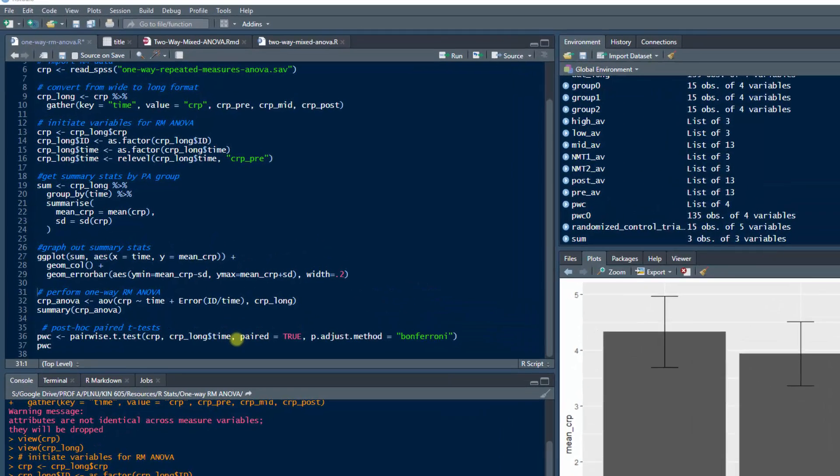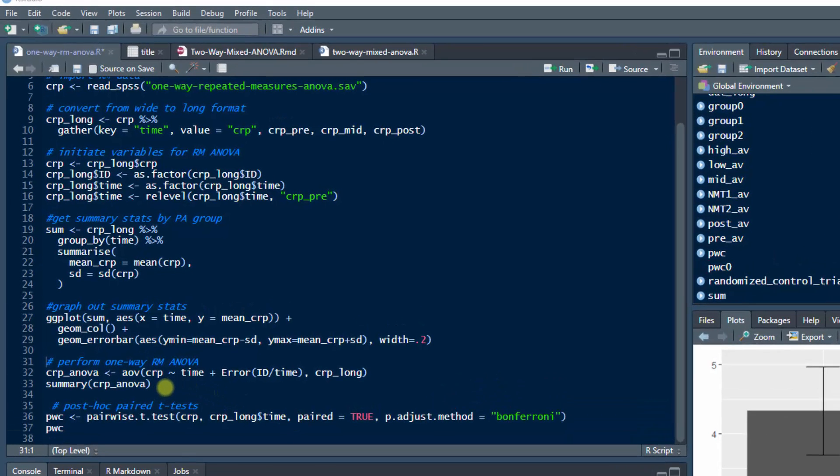In RStudio, I have here the code for performing a one-way repeated measures ANOVA. It's called one-way because we have one independent variable, which in this case is time or trial, pre, mid, and post. The code for it is actually pretty straightforward. What this means is that I'm going to assign the results of the ANOVA to this data frame called CRP_ANOVA. AOV is the function to perform what's called a linear model, and the linear model in this case will provide a repeated measures ANOVA.